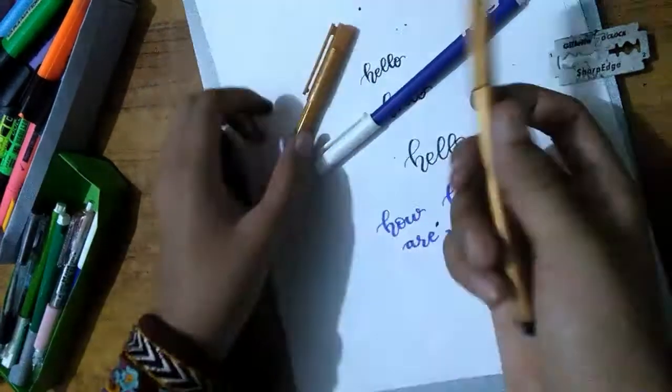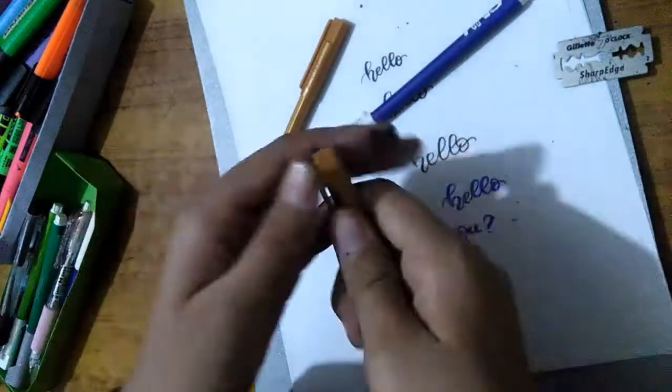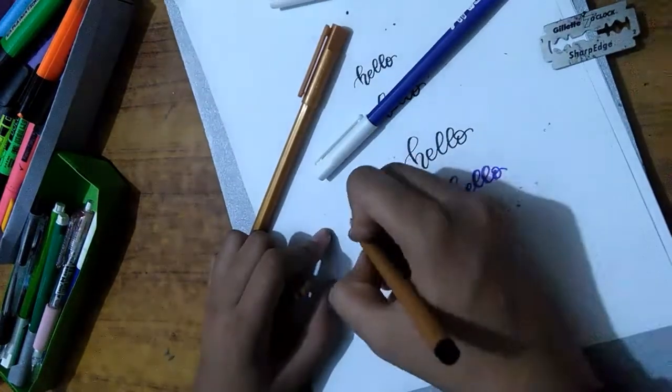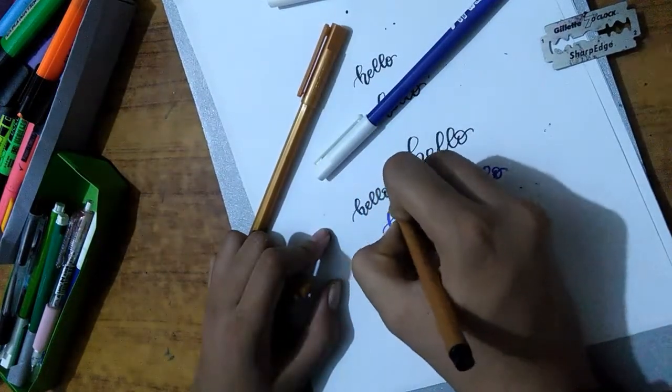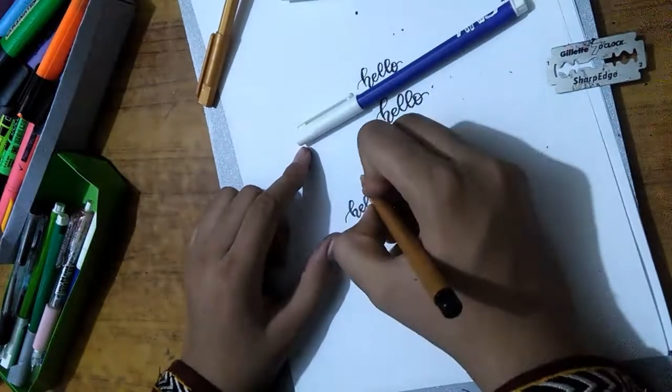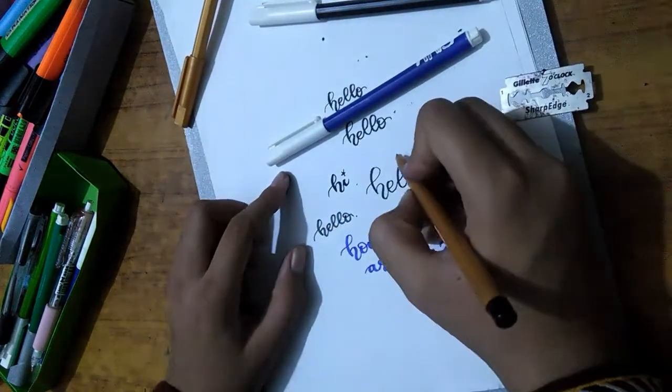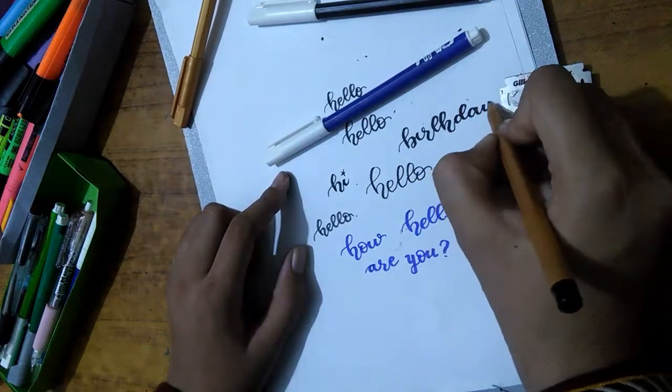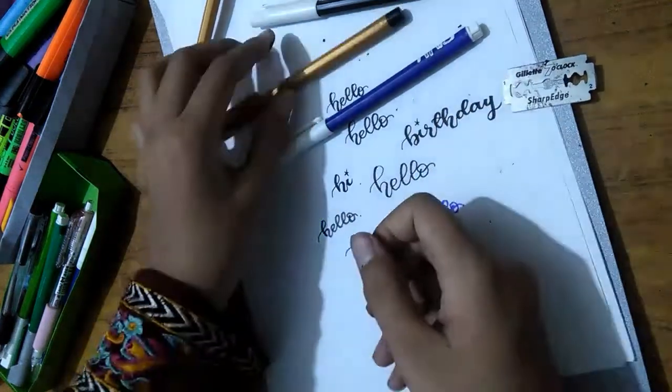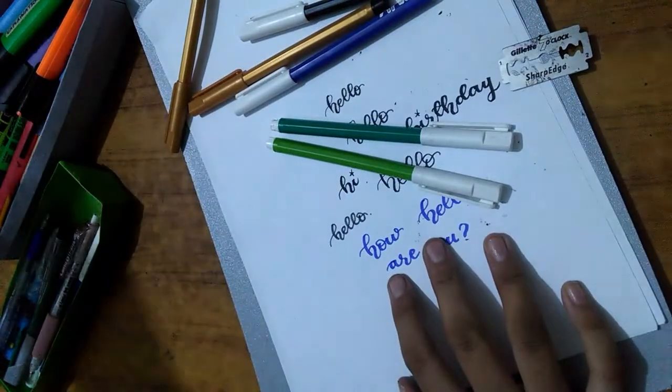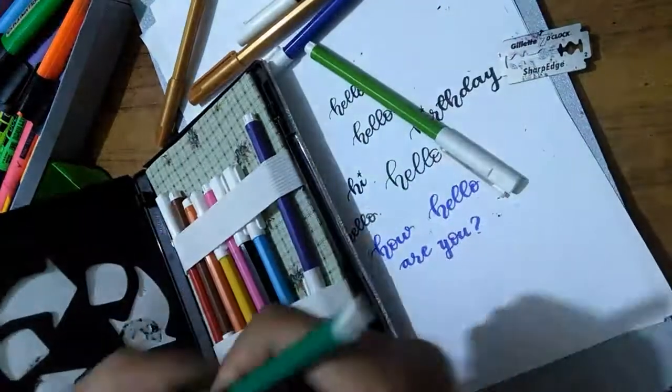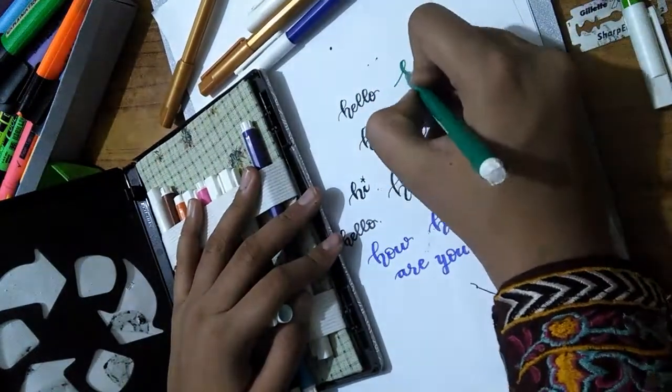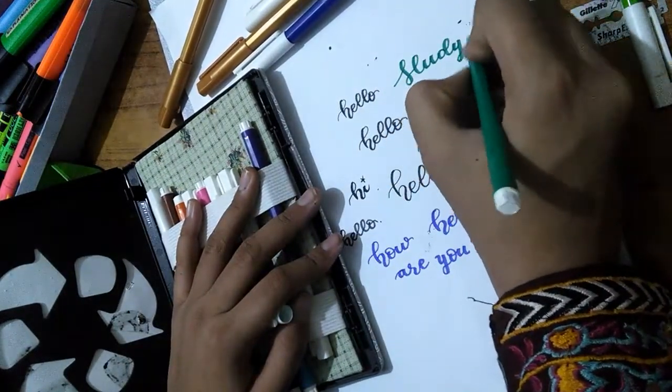You can even purchase cut markers from any store. These are really cheap, one marker is for six rupees, which is not even the fourth part of a dollar. These are also good, but if they are not available where you live, because cut markers are not found everywhere, then you can surely make your markers cut.